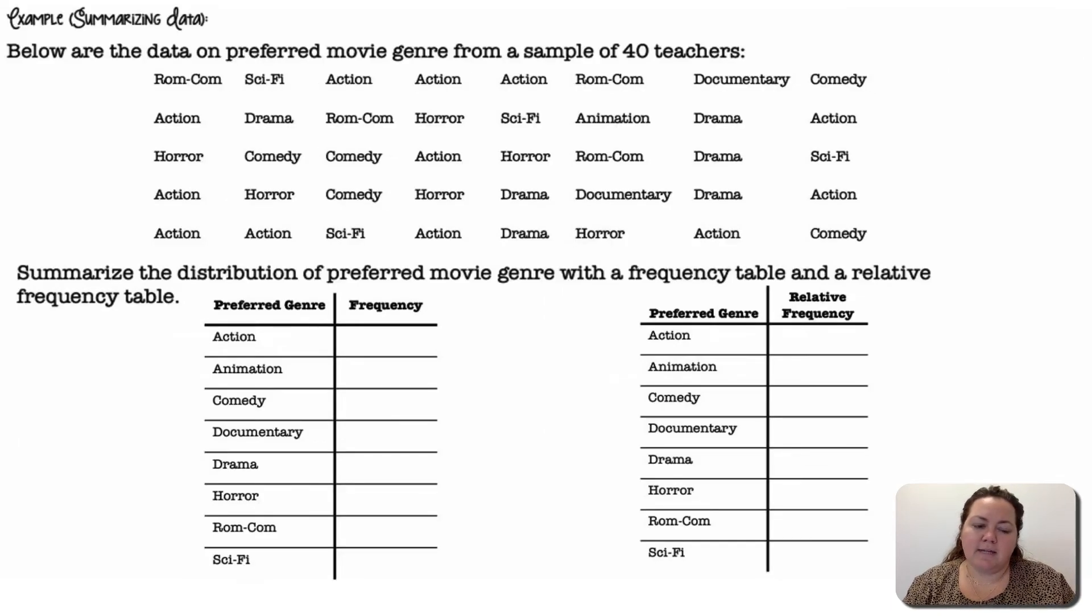Summarizing data. Below are the data on preferred movie genre from a sample of 40 teachers. Summarize the distribution of preferred movie genre with a frequency table and a relative frequency table. So we're going to go through and get our counts here. So for action, we're going to go through and count how many total teachers chose action. So there was 12.